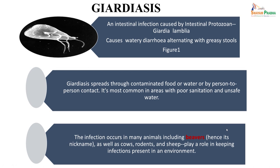It causes watery diarrhoea alternating with greasy stools, and the trophozoite is seen in this figure. This is a morphological form which is active and motile. Giardiasis spreads through contaminated food or water and by person-to-person contact. It is most common in areas with poor sanitation and unsafe water. The infection occurs in many animals including beavers, cows, rodents, and sheep, which play a role in keeping the infection prevalent in the environment.